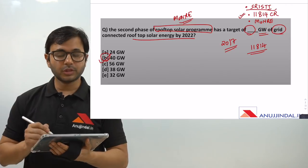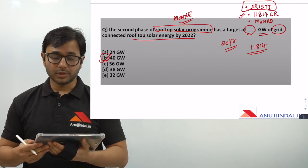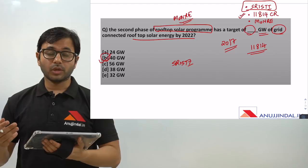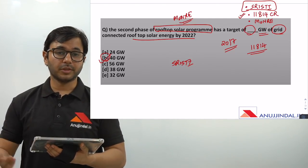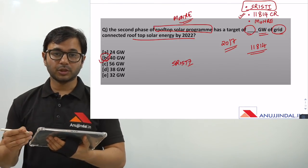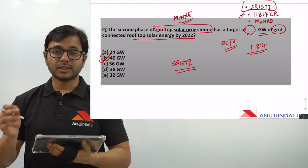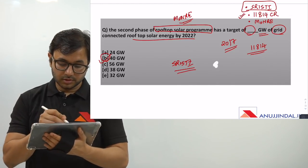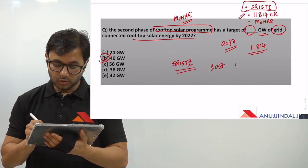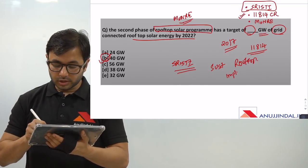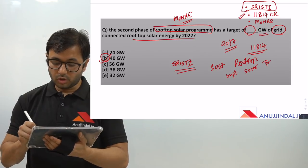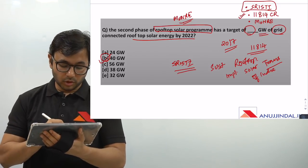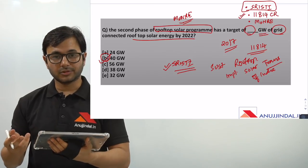What is the full form of SRIST? SRIST was the phase one of this rooftop solar program, and now phase two has been launched with the target of 40 gigawatts by 2022. The full form of SRIST is Sustainable Rooftop Implementation for Solar Transfiguration of India. That is something important for the examination, along with the facts just discussed.